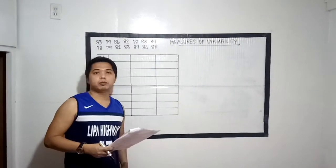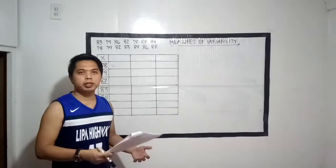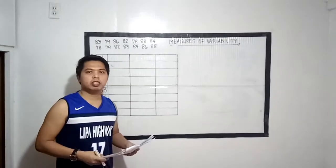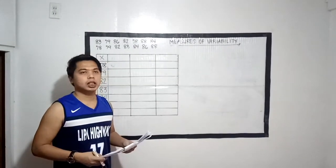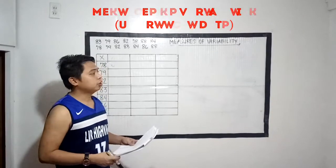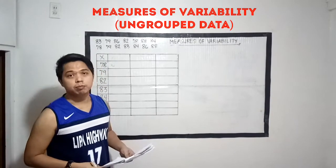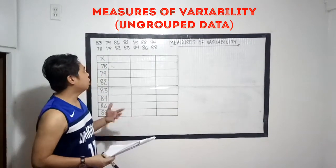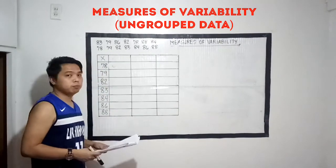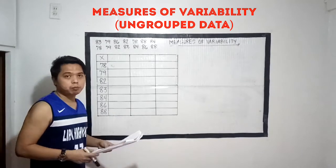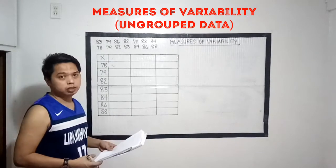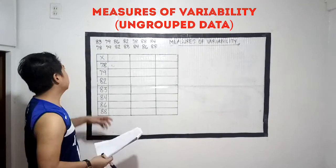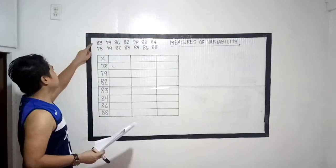Good day everyone. For today I'm going to discuss about measures of variability. I prepared an example — let's have the following scores: 83, 79, 86, 82, 78, 88, 84, 78, 79, 82, 83, 84, 86, and 88. So we have 14 scores. Before we start, let's make a table.